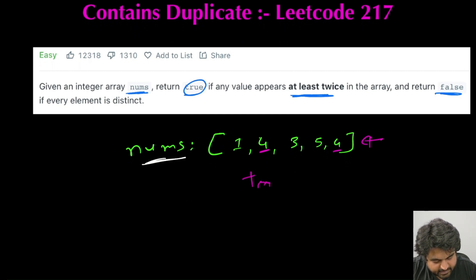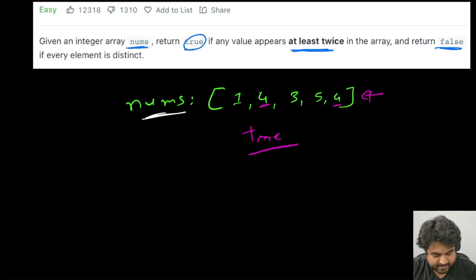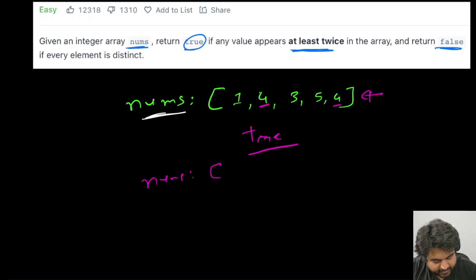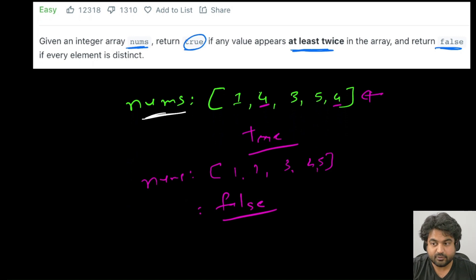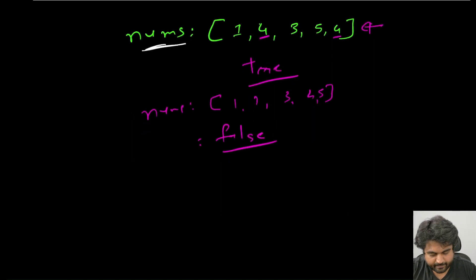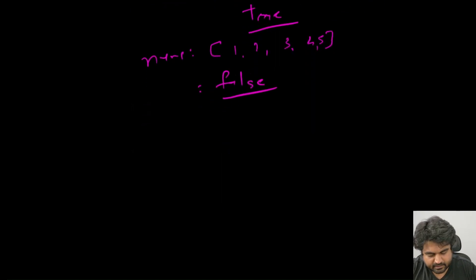If we are given another nums array where all values are unique and we don't see any duplicate values, we return false, saying that there do not exist any duplicate values. The problem statement is very simple to understand.